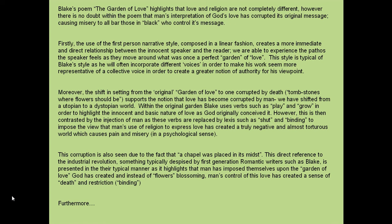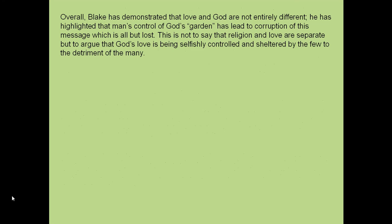Furthermore, you can see I will continue on with my argument embedded within what I'm trying to suggest to the marker, but that's the structure — argument is being used all the way throughout. Then finally, overall: Blake has demonstrated that love and God are not entirely different. He has highlighted that man's control of God's garden has led to corruption of this message, which is all but lost. This is not to say that religion and love are separate, but to argue that God's love is being selfishly controlled and sheltered by the few to the detriment of the many.